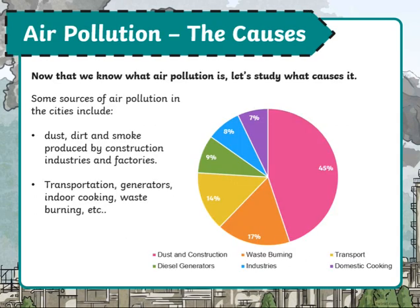Moving to the causes of air pollution. Some sources of air pollution in cities include dust, dirt, and smoke produced by construction industries and factories. Then we have transportation, generators, indoor cooking, and waste burning.